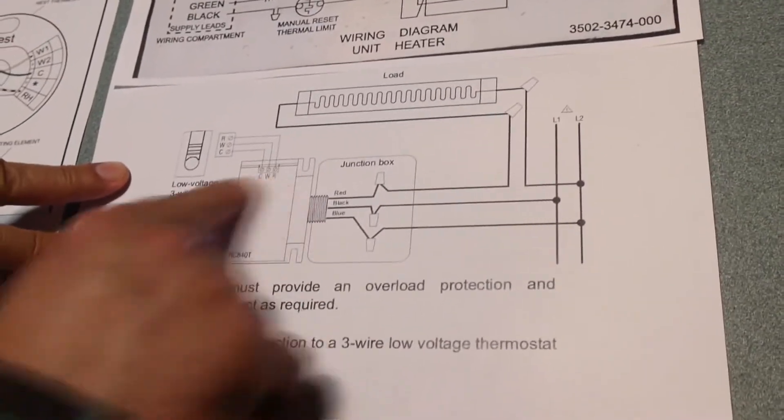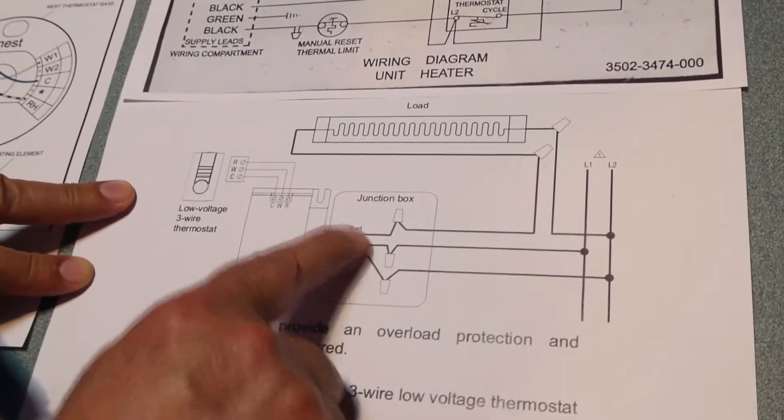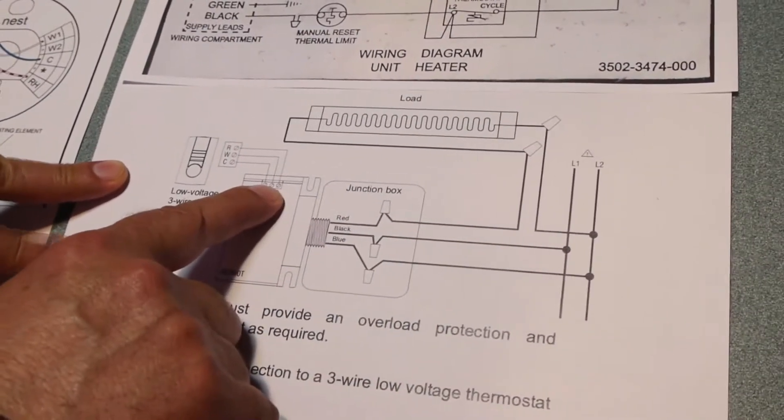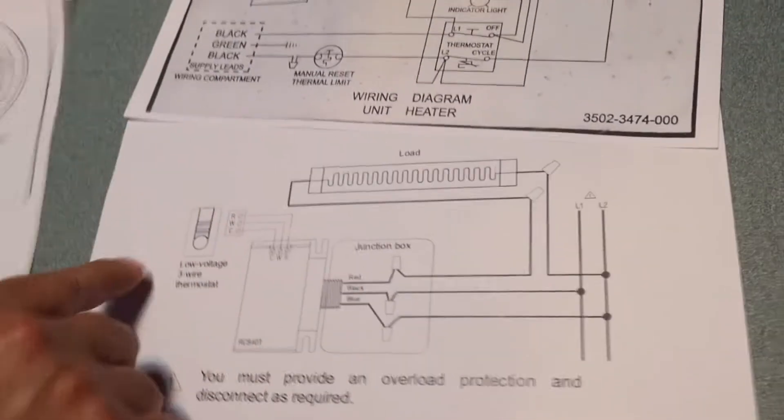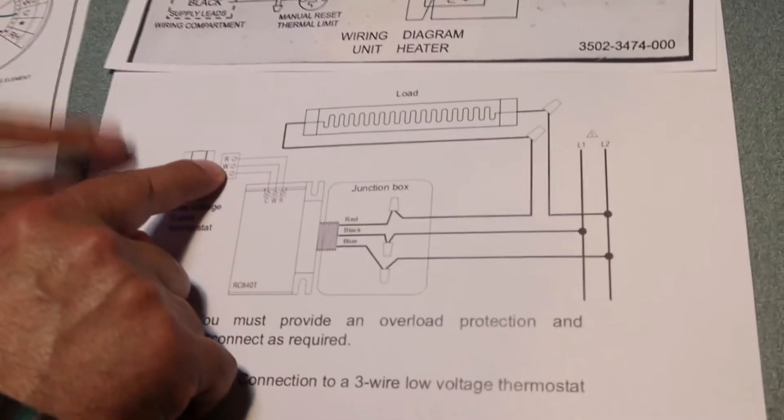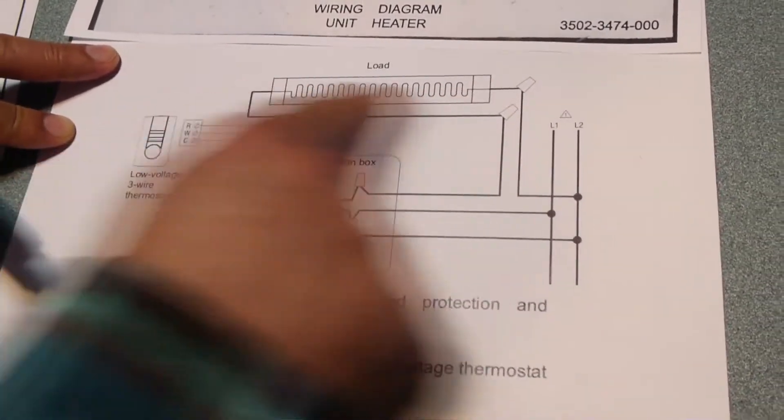This is the relay that we're going to put in place and this is the blue, the black, and the red wires that come from the relay and then we're going to be able to hook the Nest thermostat onto the three wires over here.